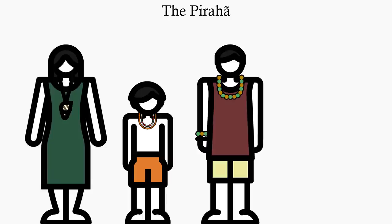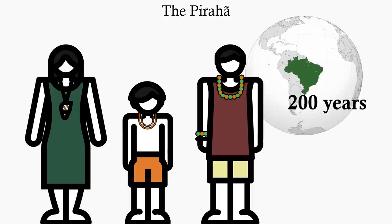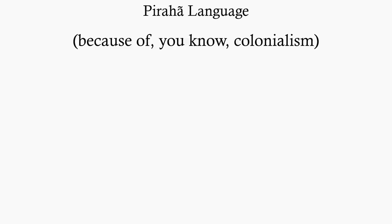The Pirahã are the only remaining tribe of the Mura people and have had contact with others in Brazil for about 200 years, but they're still a mostly monolingual community. Their language is the only one left of its family and it's known for its strange features.